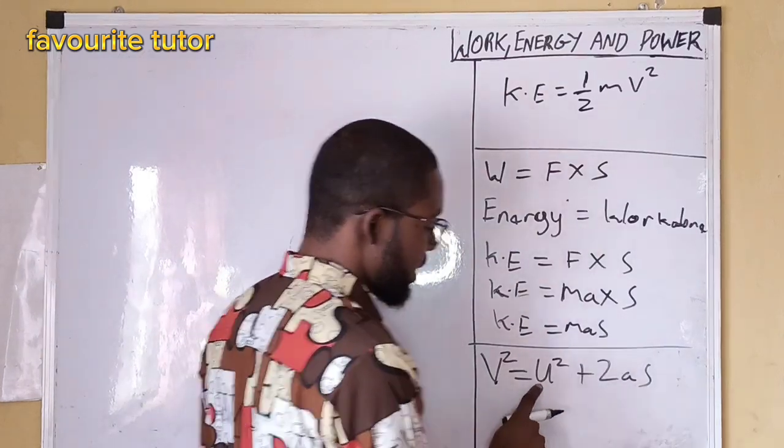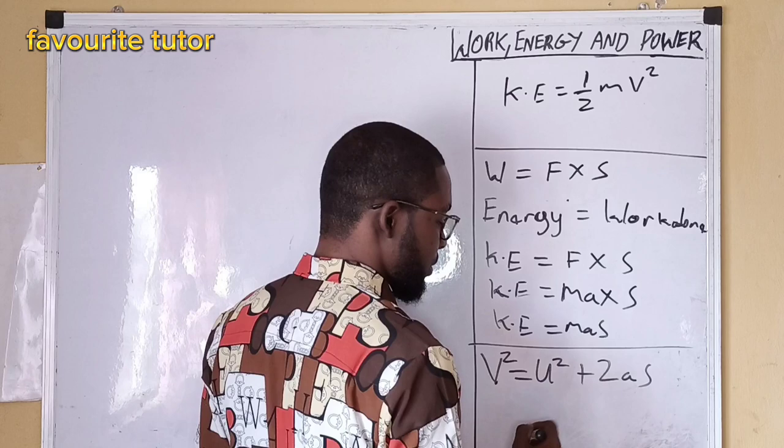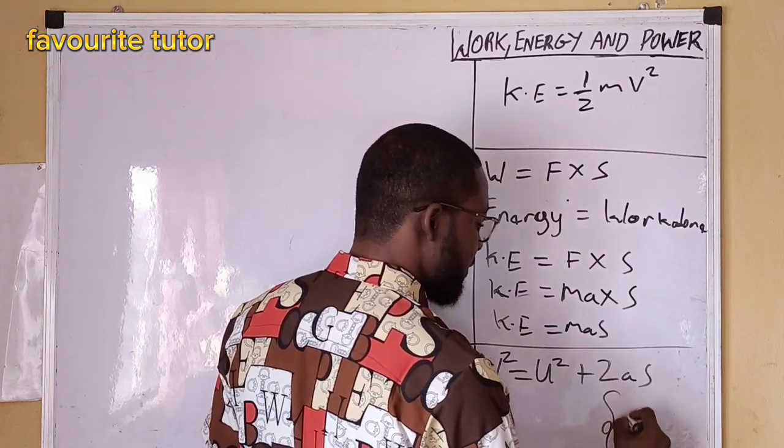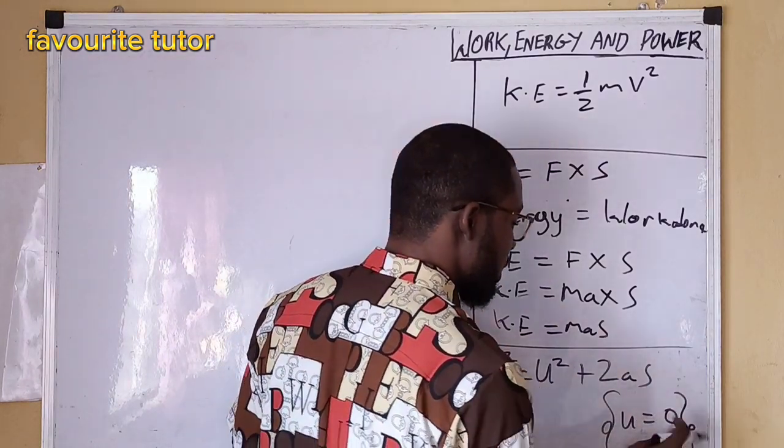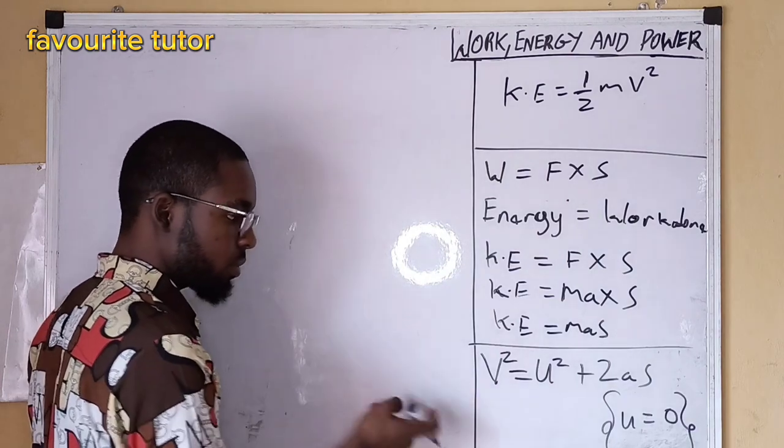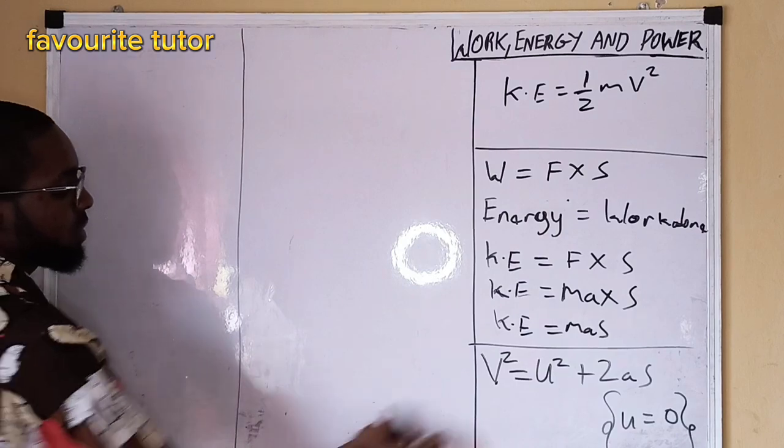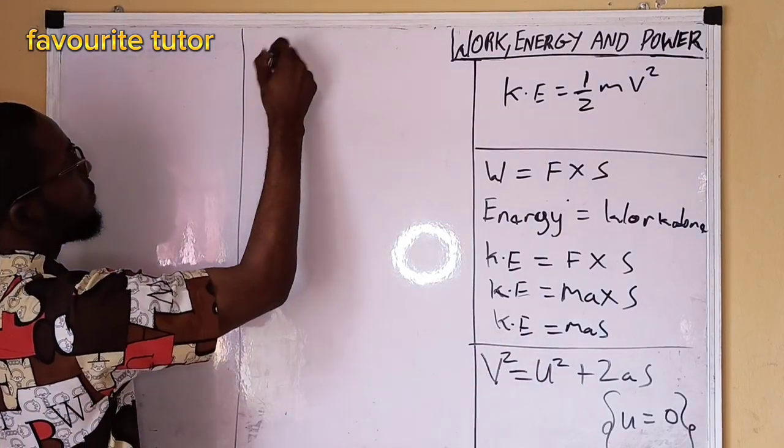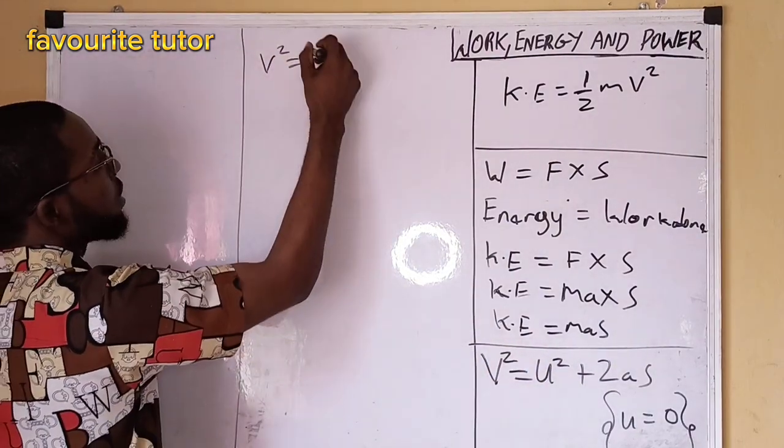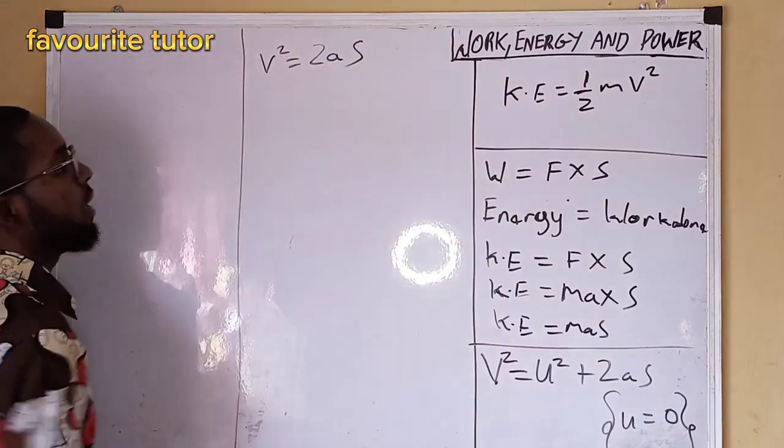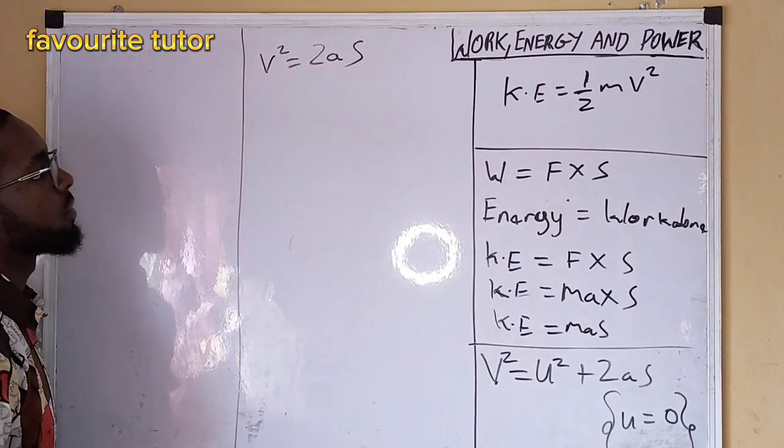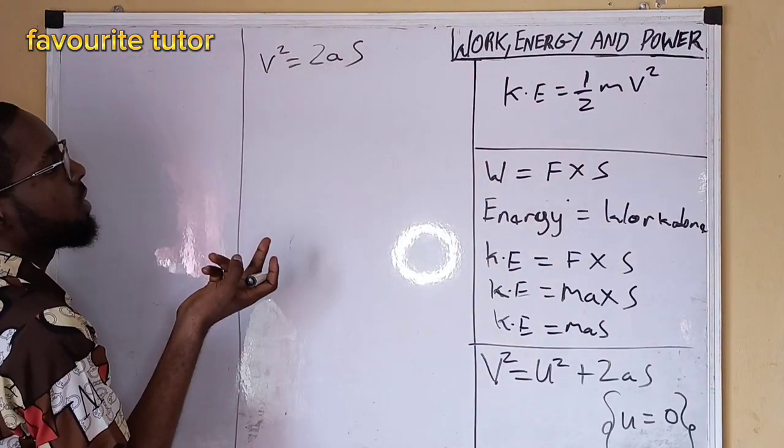So therefore we say that u, the initial velocity, is zero. From this equation of motion, since we have that u the initial velocity equals zero, this becomes v squared equals 2 a s.